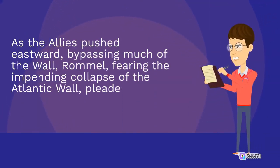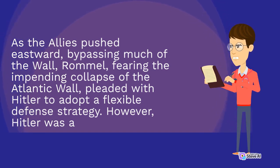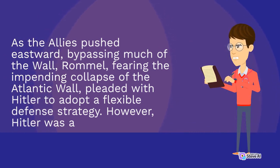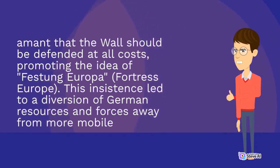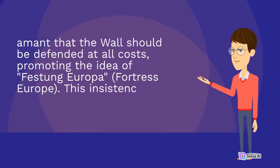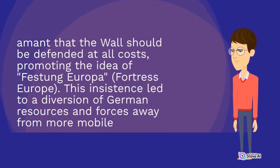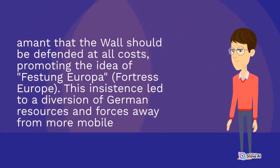As the Allies pushed eastward, bypassing much of the wall, Rommel, fearing the impending collapse of the Atlantic Wall, pleaded with Hitler to adopt a flexible defense strategy. However, Hitler was adamant that the wall should be defended at all costs, promoting the idea of Festung Europa, Fortress Europe. This insistence led to a diversion of German resources and forces away from mobile defense tactics.